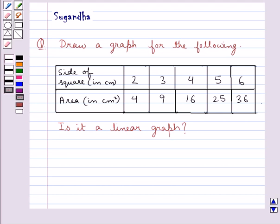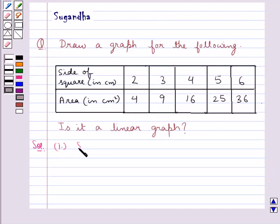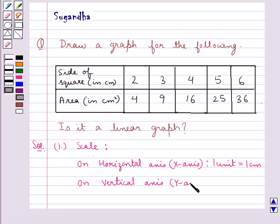For this, first we will draw the x axis and the y axis. We take the horizontal line as the x axis and the vertical line as the y axis. As you can see, we have drawn the x axis and the y axis. Now the scale that we take would be: on the horizontal axis, that is the x axis, the scale would be 1 unit equal to 1 cm. And on the vertical axis, that is the y axis, the scale would be 1 unit equal to 4 cm².